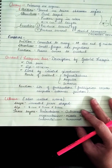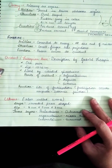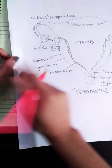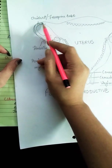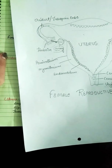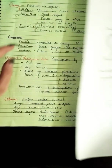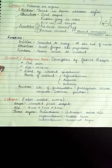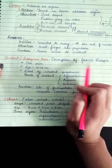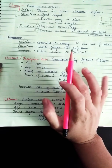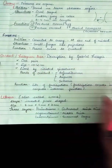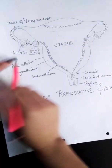Next is the oviduct, also called the fallopian tube. It was described by Gabriel Fallopius, which is why we call it the fallopian tube. There is one pair of oviducts in the female reproductive system.